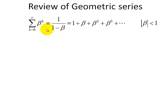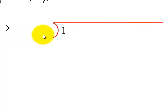We're going to prove this formula by using long division. 1 divided by 1 minus beta can be rewritten as long division, shown here. So here we have 1 and we have 1 minus beta here.